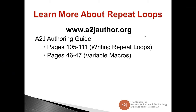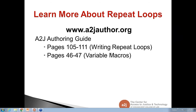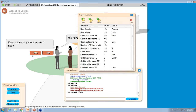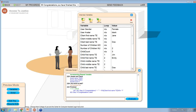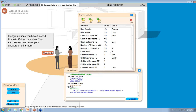Some additional resources: you can always go to the A to J Authoring Guide — pages 105 to 111 are on writing repeat loops, and pages 46 to 47 are on variable macros. A question came in: for the asset question, how do you let the end user out if they answer yes by mistake? If they entered house, boat, and car and accidentally said 'yes, I have one more,' they can just go back and enter no, and then they're taken out of the loop.